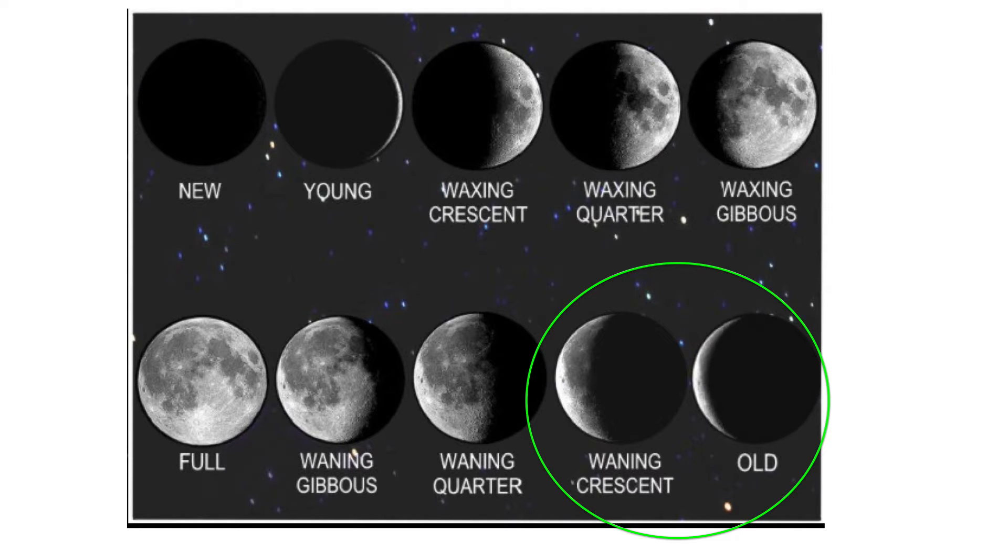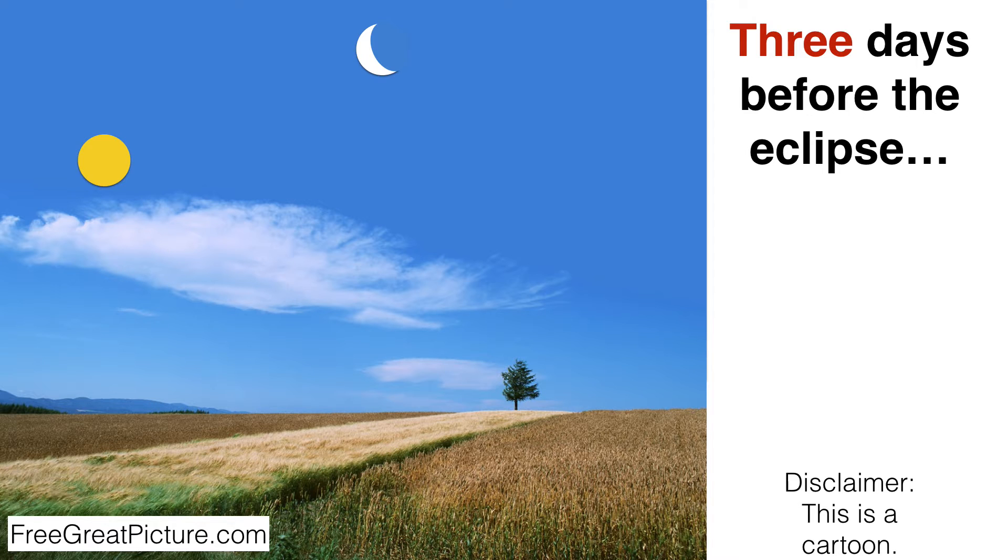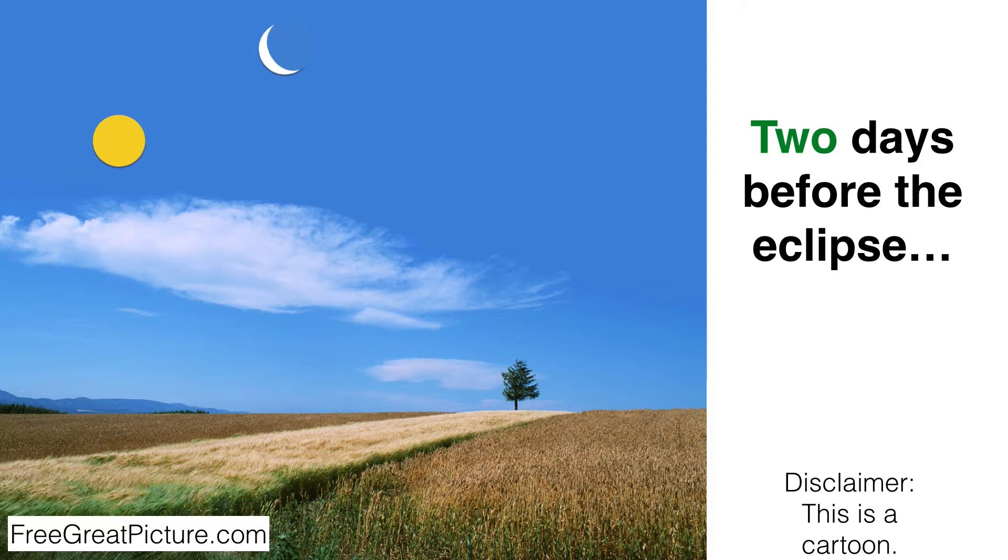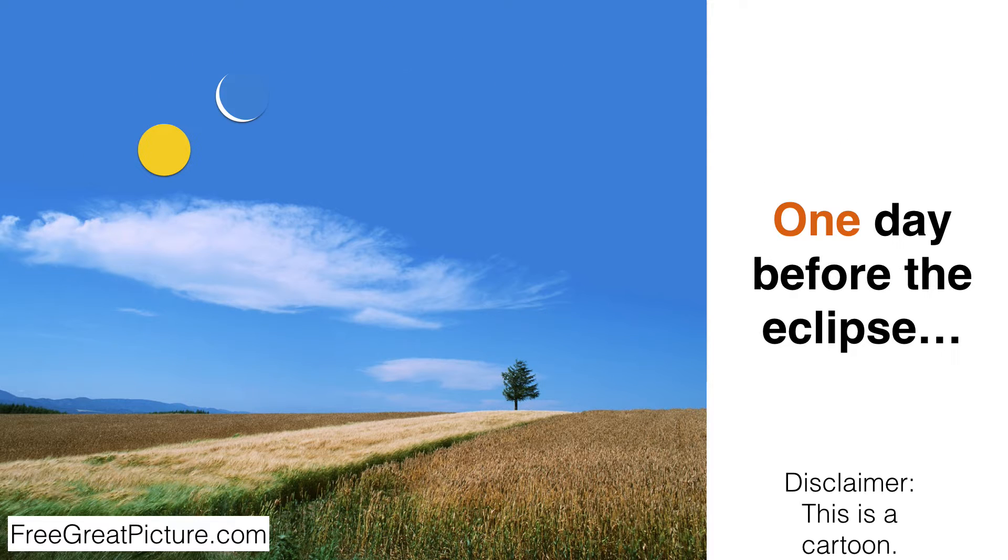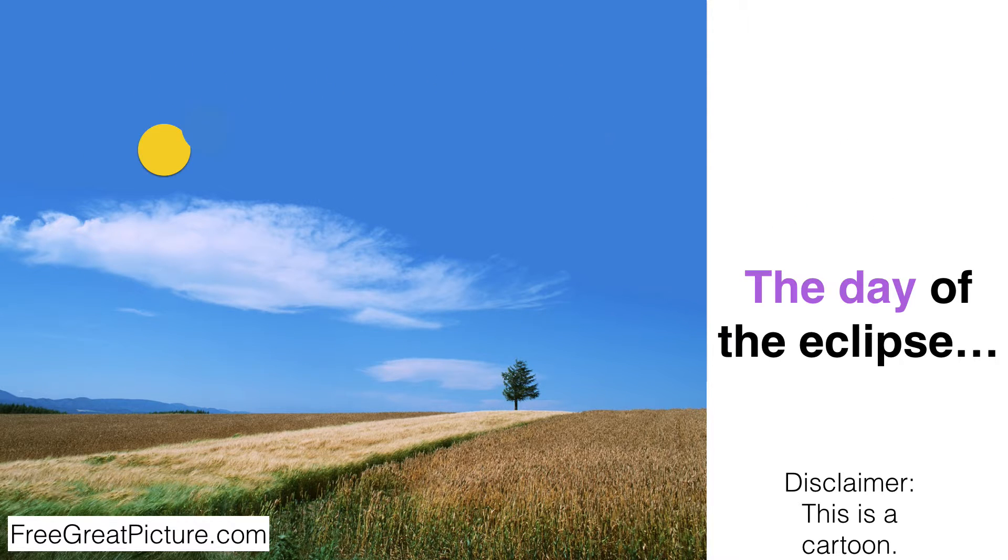When we take a look at the following animations, which are going to start three days before the eclipse, it's important you understand the moon we're going to see is called a waning crescent moon. The crescent is going to be getting smaller in each successive animation as the moon gets closer to the sun, and we're going to finally end up with a new moon on the day of the eclipse. Three days before the eclipse, two days before the eclipse, one day before the eclipse, and then lastly on the day of the eclipse.